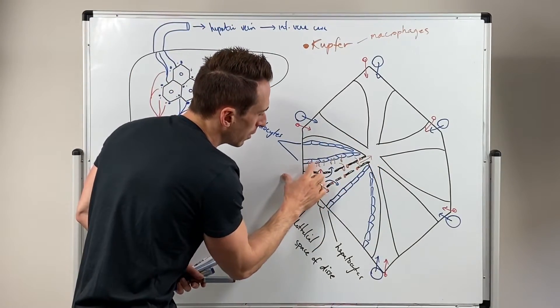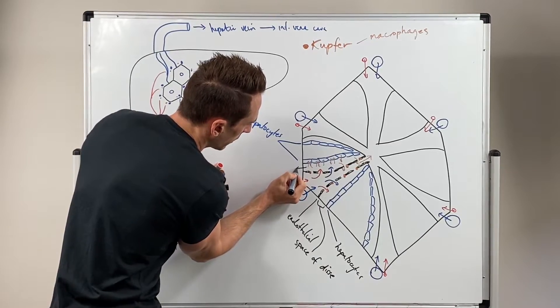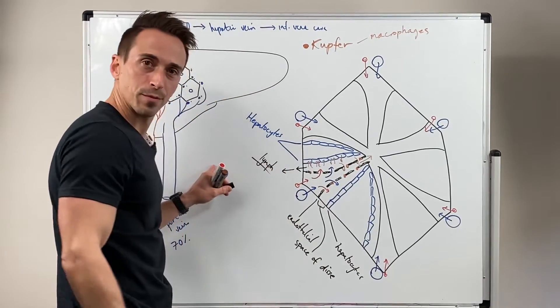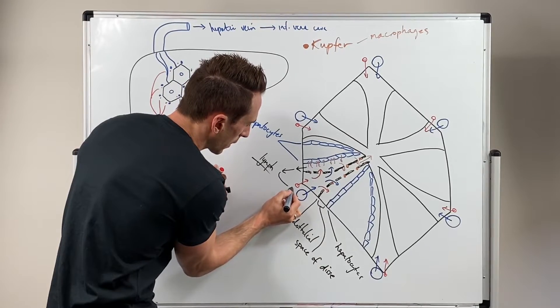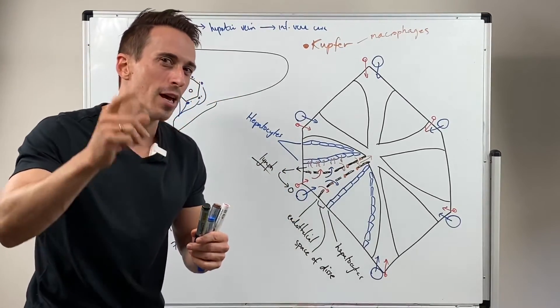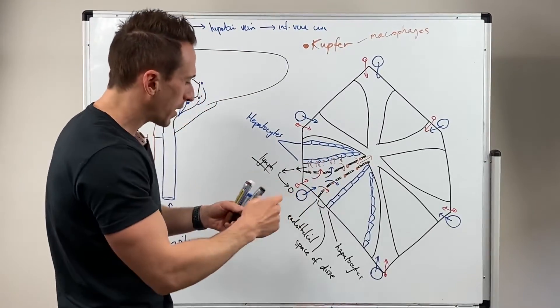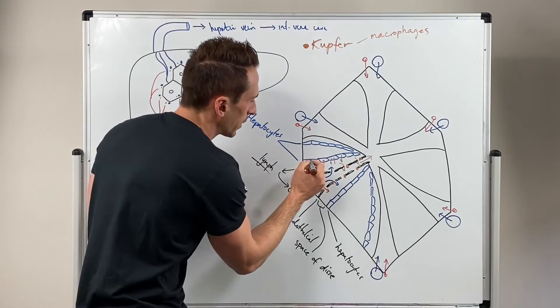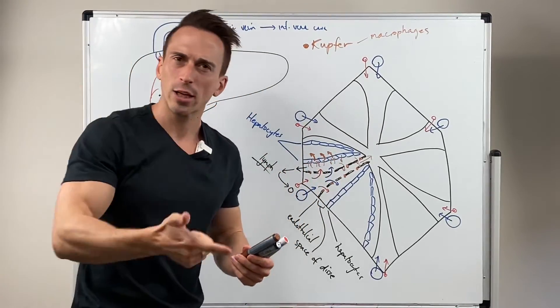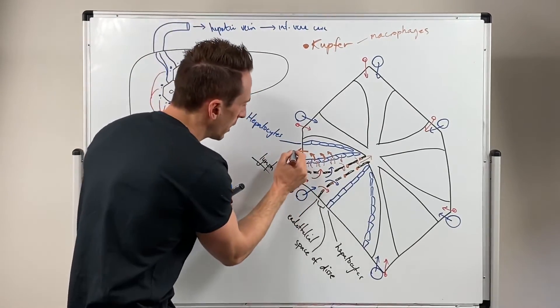Some things that move into this Space of Disse don't go in either direction, and what they do is they drain in this direction and this becomes lymphatics. This lymph forms a lymphatic vessel. We haven't spoken about what these hepatocytes do in the space between the hepatocytes. They can produce something called bile. Bile is a collection of cholesterol, electrolytes, and water. This bile will drain in this direction into bile ducts.